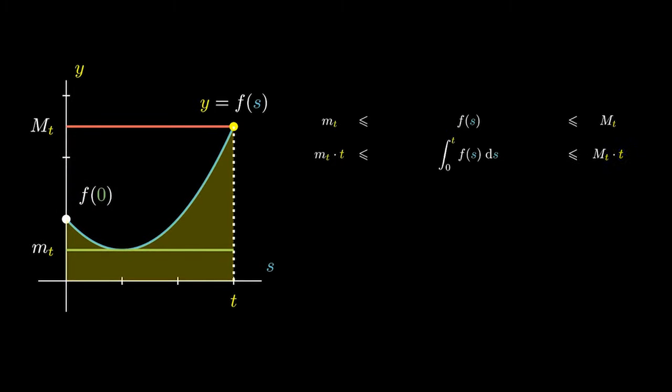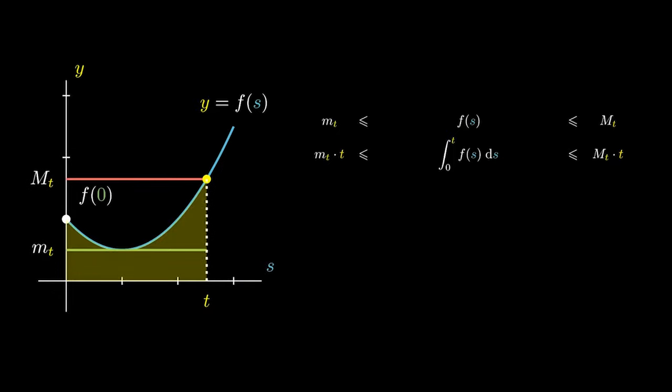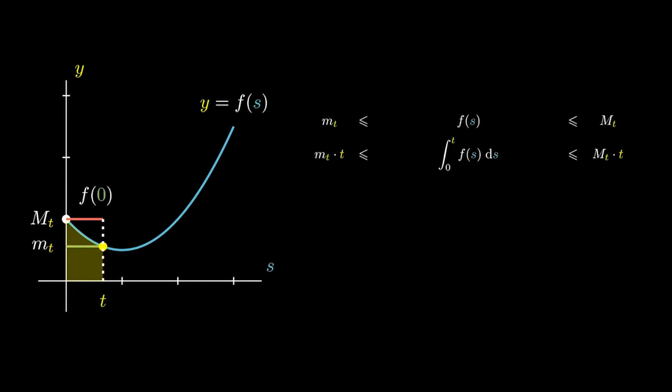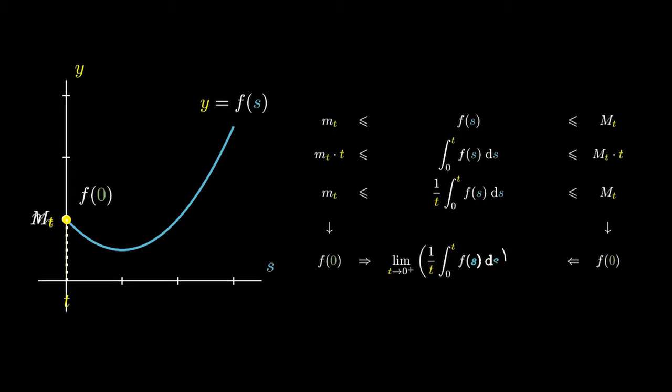As we move the point closer and closer to 0, we notice that f(s) always lies in between these two bounds. What's even more fascinating is that as we move the point closer and closer to 0, both of the m(t)'s approach f(0). By the squeeze theorem, it also has a limit of f(0).